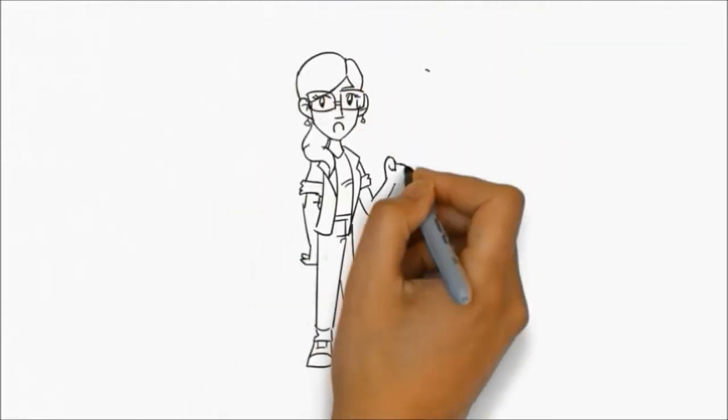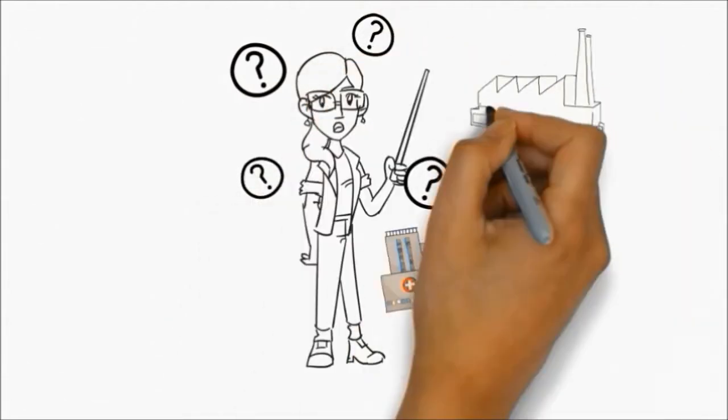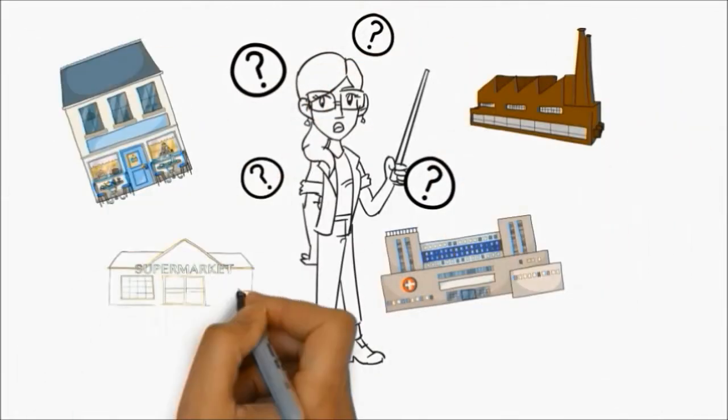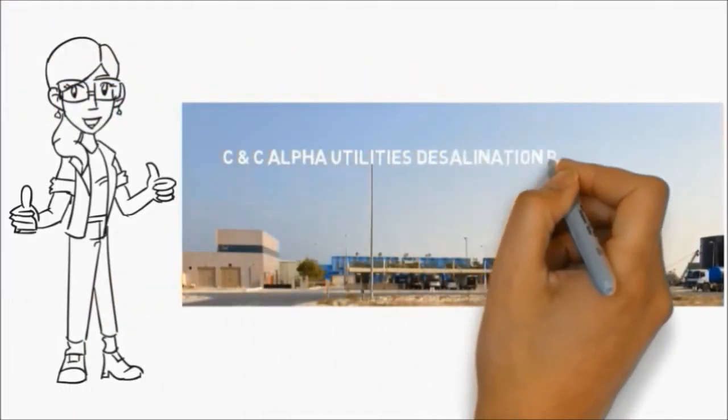The next question was, where do I adopt these mechanisms for maximum benefit? The case study opted was the CNC Alpha Utilities desalination plant located in Sharjah.